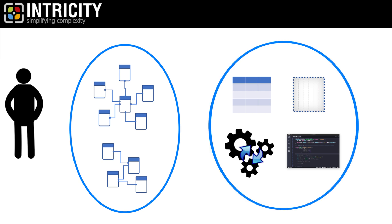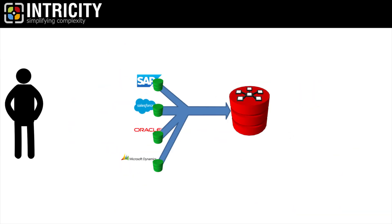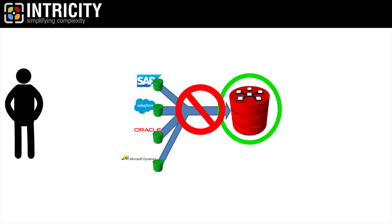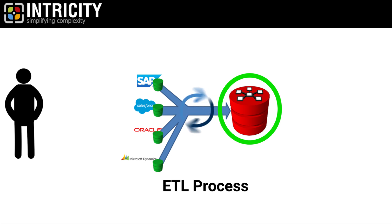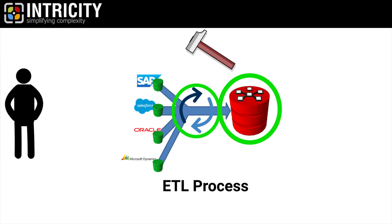That takes us to our third misunderstanding, which is assuming that you can migrate an MPP data warehouse without touching the data integration layer. In the rare case where all the data integration is following an ELT process, this might be possible. But in the vast majority of cases, the ETL/ELT method has to be deeply understood and often converted wholesale. Fortunately, there are tools out there that facilitate this cyclical conversion process.